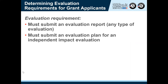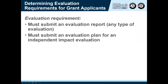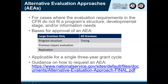Example two: A national direct grantee has operated the Envirocorp program for 15 years. They've acquired a new partner and are proposing to expand to two new states, increasing their cost reimbursement CNCS grant from $400,000 to $600,000 per year. Their recompete also describes adjustments to member training and supervision, plus a shift in how environmental improvements are assessed. The proposed changes are not enough to take them outside the definition of same project, so the 15 years of competitive funding history still counts. They are required to submit both an evaluation report and an evaluation plan. The evaluation plan for the upcoming cycle must be an independent impact evaluation because the grantee is proposing a budget of $600,000 per year, qualifying them as large.